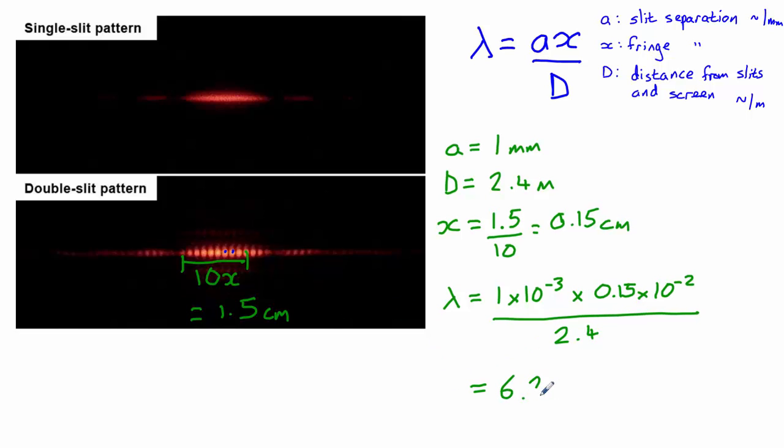Which gives us an answer of 6.25 times 10 to the minus 7 meters, which is equal to 625 nanometers.